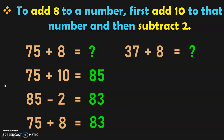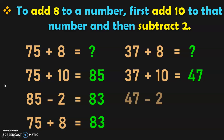Let us do another example. 37 plus 8: first add 37 plus 10. 37 plus 10 is 47. Now subtract 2 from 47. 47 minus 2 is 45. So, the answer for 37 plus 8 is equal to 45.